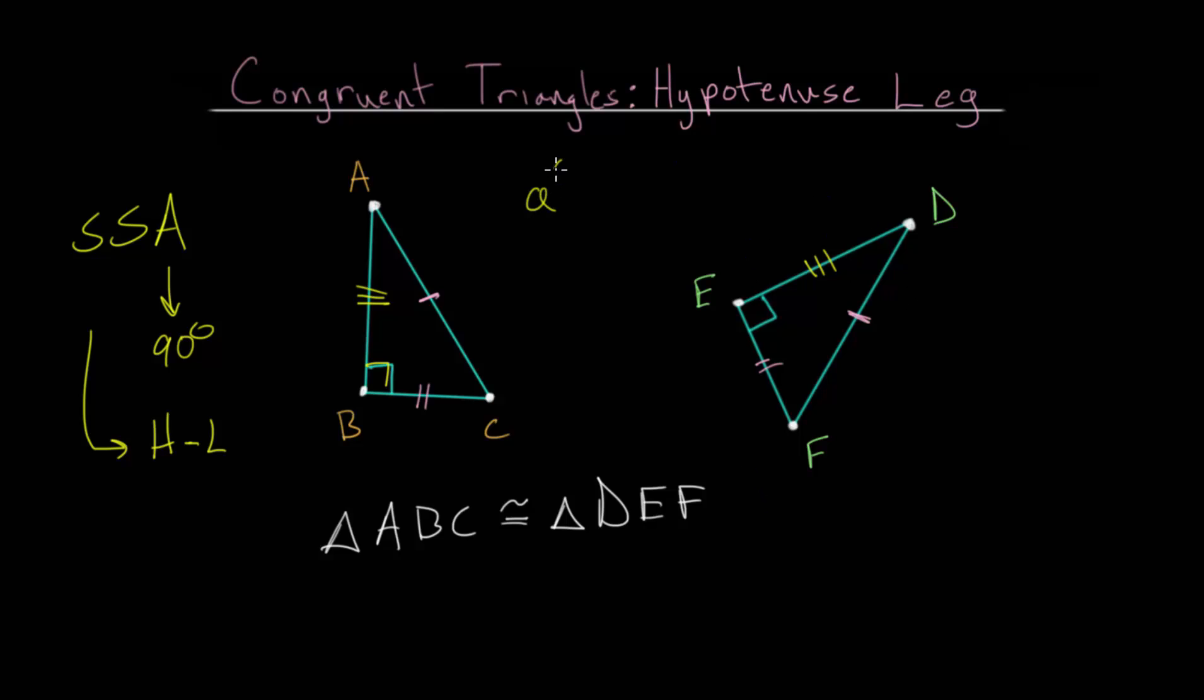Since remember, the Pythagorean theorem for right triangles states that A squared plus B squared is C squared, where A and B are the legs of the triangle, and C is the hypotenuse.